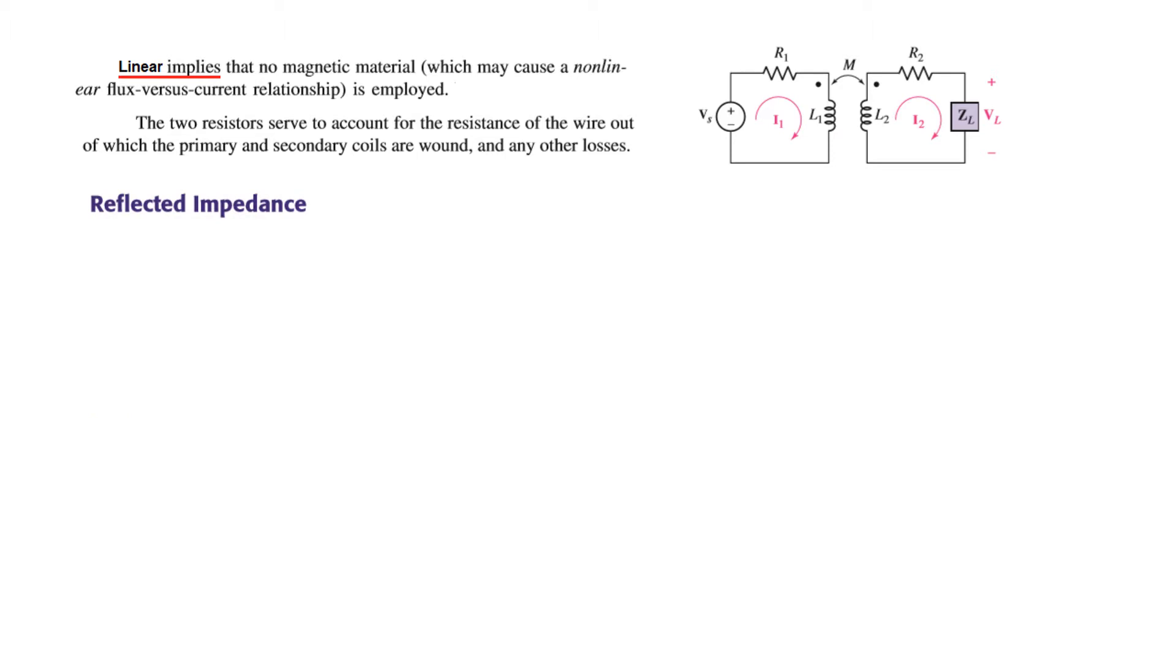The reflected impedance means the effect of output impedance on the primary side. So this has been reflected and brought to the primary side and then what will be its effect.